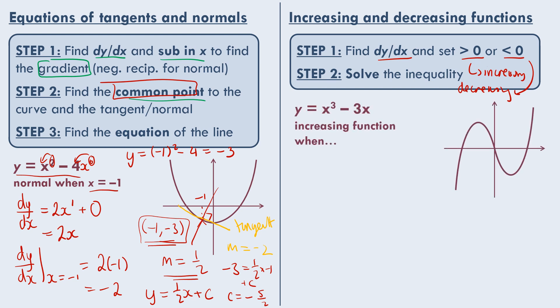Let's have a look at this example here: y equals x cubed minus 3x. First we need to find dy by dx, and that is 3x squared take away 3. Then we need to set this greater than 0 because we're looking for where it's increasing. And then we can solve this by taking the 3 to the other side and then dividing by 3, so x squared has to be greater than 1.